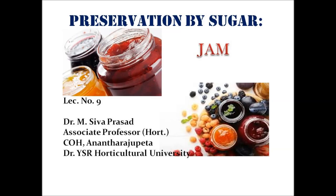Today we will discuss preservation of food products by using sugar. In the last classes we discussed preservation of fruit juices by different techniques. Fruit beverages are either fermented or unfermented, and they are preserved for longer periods by methods like high temperature pasteurization, sterilization, or chemical preservatives like potassium metabisulfate or sodium benzoate, or by using sugar.